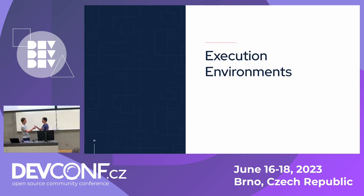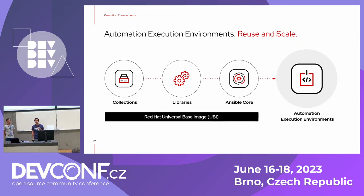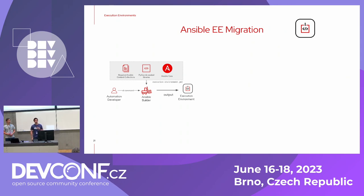Now for the execution environment — the automation controller is the control plane, but how do users actually run their playbooks? We have the automation execution environment, which is a container image based on the universal base image from Red Hat. It contains all the dependencies needed to run playbooks: Ansible collections, libraries such as RPMs or Python modules, and the Ansible core version. Everything is packed together into this image that is used to run playbooks and scale out. We use Ansible Builder for this, but with a different approach because we are in a disconnected environment.